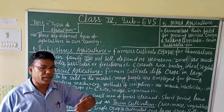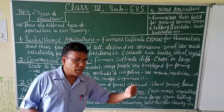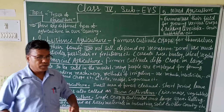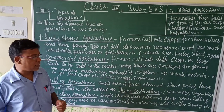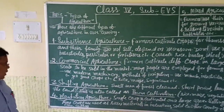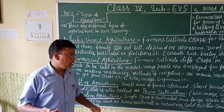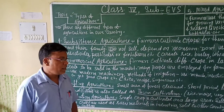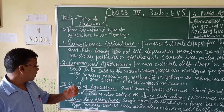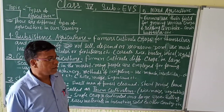This is a kind of import and export — things which our country needs are demanded from other countries, and the same way other countries demand things from our country. So in plantation agriculture, crops are used as raw materials in industries and sold to other countries. Mainly tea and coffee are the crops sold to other countries in this type of agriculture.